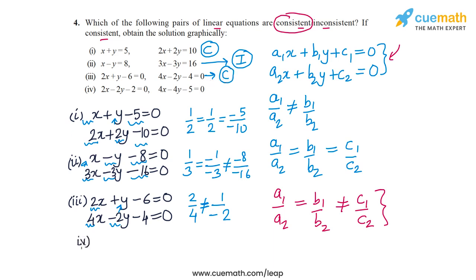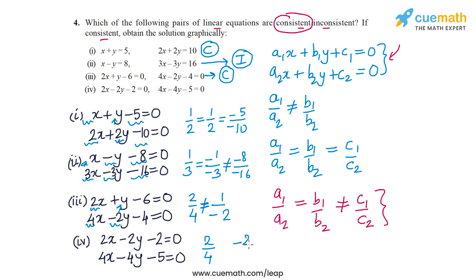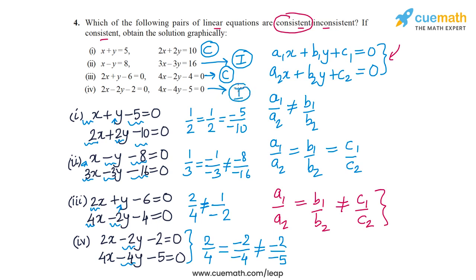The fourth pair is 2x − 2y − 2 = 0 and 4x − 4y − 5 = 0. Here a1/a2 = 2/4 = 1/2 and b1/b2 = −2/−4 = 1/2, so they are equal. But c1/c2 = −2/−5 = 2/5, which is not equal to 1/2. So a1/a2 = b1/b2 ≠ c1/c2, meaning the lines are parallel and the pair is inconsistent. Of the four pairs, the first and third are consistent; the second and fourth are inconsistent.